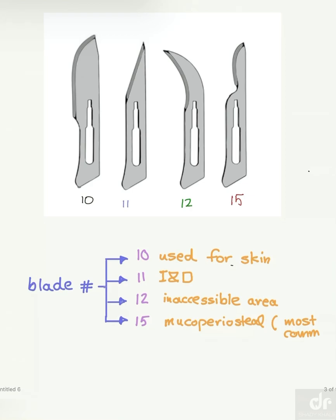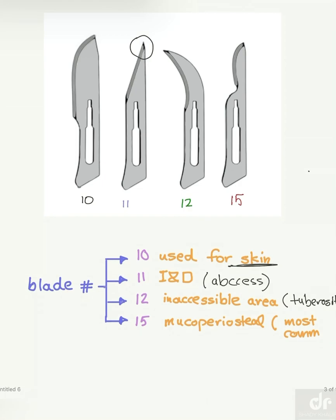There are numerous types of blades used in surgery, but in our field of dentistry, we mainly use four types of blades: number 10, number 11, 12, and 15. Number 10 is used for skin. Number 11 is used in incision and drainage, like in case of abscess, because it has a sharp pointed or tipped end — that's why we use it to open the abscess. Number 12 is used in inaccessible areas like the tuberosity. Number 15 is the most commonly used and we use it in muco-periosteal surgery.